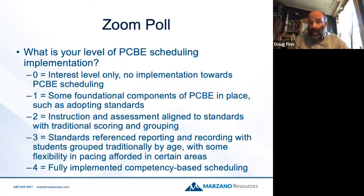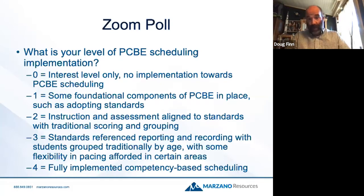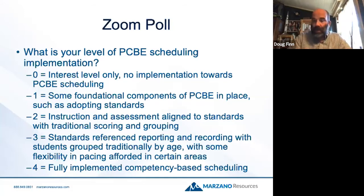The results show: instruction and assessments happening, which is level two — instruction and assessments aligned to standards but still traditionally scored, very common. Level three is standards-referenced reporting, where we're reporting things out but students can still move to the next grade without technically being proficient. We've got some good stuff going on, and then we've got one person fully implementing. Keep in mind where you're at, because during networking you'll share this out and do some plus-deltas: what's worked, what doesn't, what are some different things that are there.